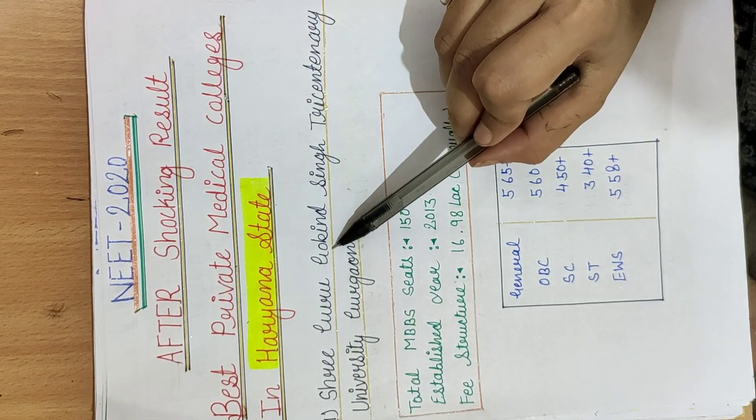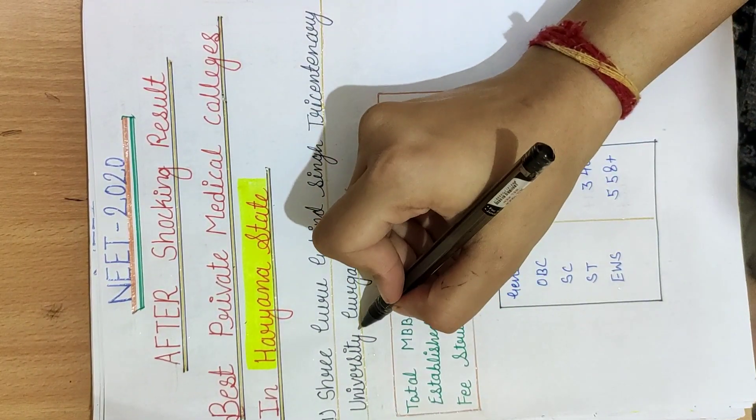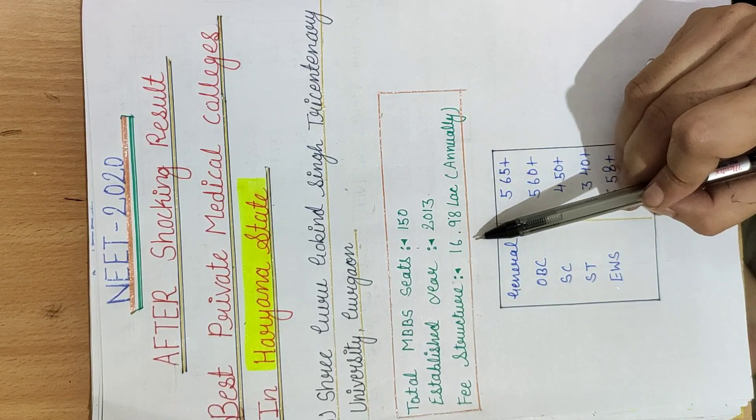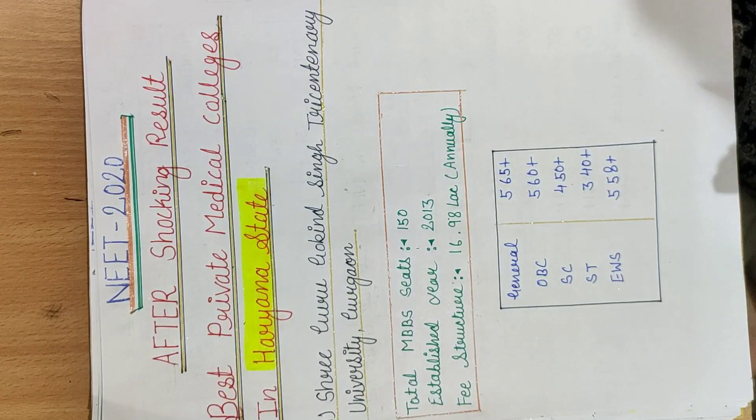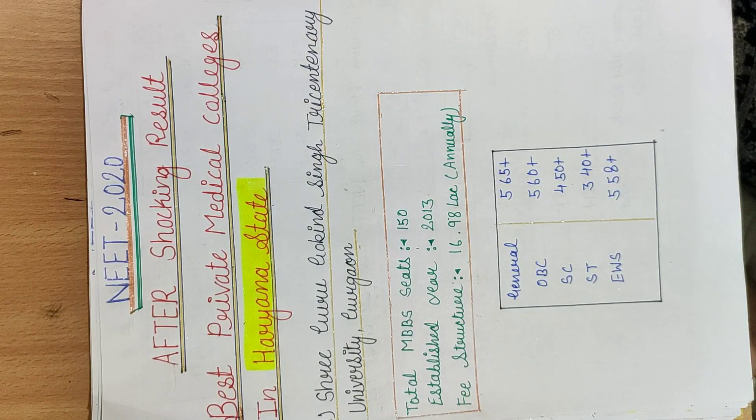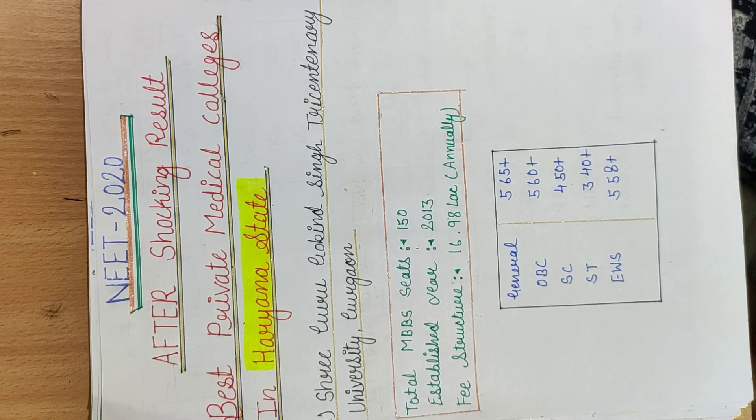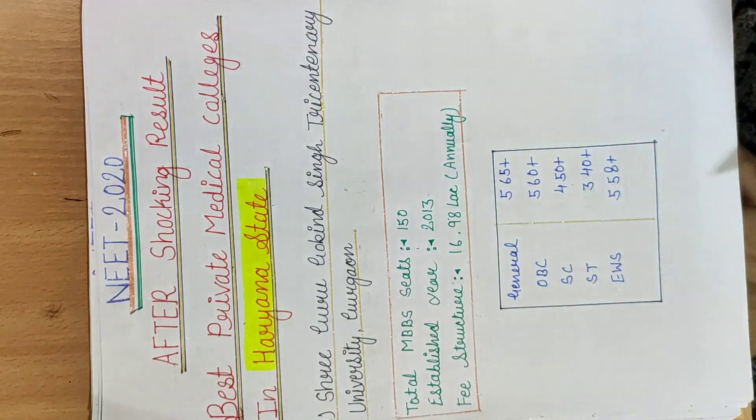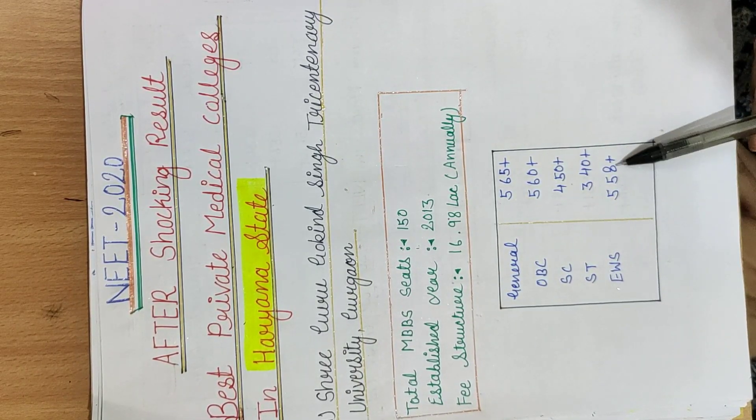First, let's talk about Shri Guru Govind Singh 21st Century University, Gurgaon. Total MBBS seats are 150 and its establishment year was 2013. Its fee structure is 16.98 lakh annually. If you haven't seen our video on India's top 10 private medical colleges for MBBS course, please check that video. For general category, cutoff is 565 plus, OBC 560 plus, SC 450 plus, ST 340 plus, EWS 558 plus.